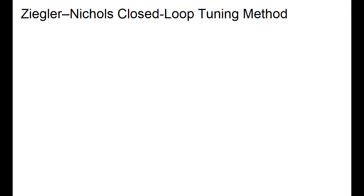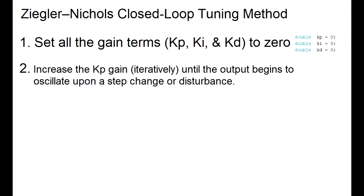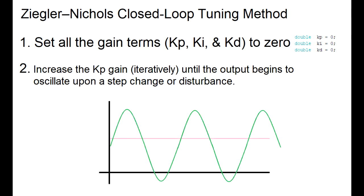The first step of this method is to put all the gains to zero, and then slowly increase the proportional gain until the output begins a steady oscillation upon startup or a disturbance. This proportional gain is known as the ultimate gain, Ku. And we also need to know the period of this oscillation, which we'll call Tu.